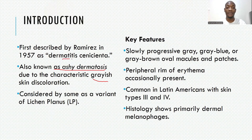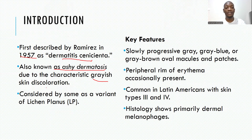It was first described as dermatitis cinereata by Ramirez in 1957. The name 'ashy dermatosis' comes from the characteristic gray skin discoloration that comes with this particular condition. Some people consider it as a variant of lichen planus — specifically, lichen planus pigmentosus.